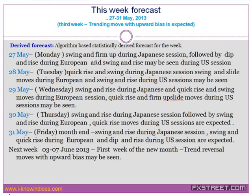On 27th today, swing and firm up during the Japanese session. We could see a small dip during early European session, and then a rise is expected. During the US session, swing and rise moves may be seen. This is a derived forecast irrespective of holidays. If you see the Forex calendar, there is a holiday in UK as well as US, so there is a great possibility of volume dwindling down, and the market might make subdued moves.